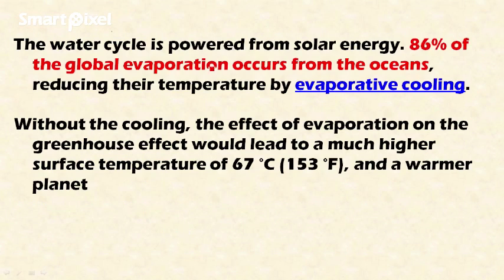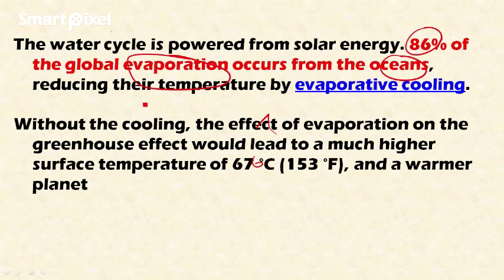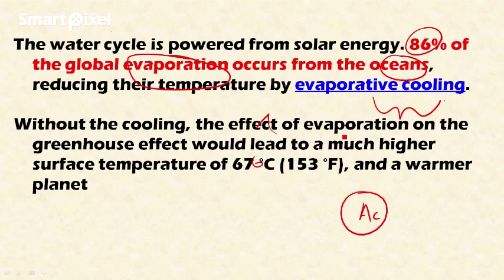Some important statistics related to the water cycle: the water cycle is powered by solar energy, and 86% of global evaporation occurs from the ocean. This evaporation reduces temperature through the mechanism of evaporative cooling — all air coolers work through this mechanism. When water evaporates, it creates a cooling effect.